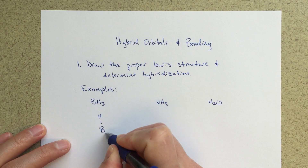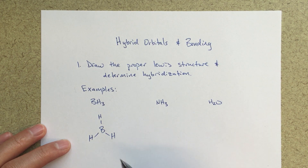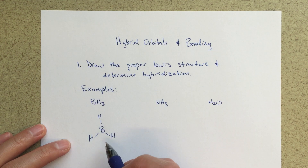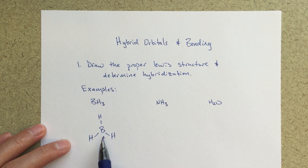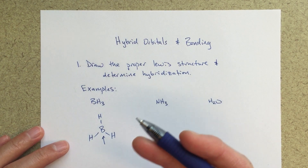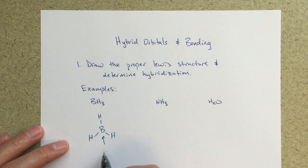For BH3, the geometry is trigonal planar. I can draw this Lewis structure — it's pretty straightforward. In terms of determining hybridization around that boron, we ask: what is the molecular geometry? It's trigonal planar, and if it's trigonal planar, then we're going to have sp2 hybridization. So this boron has sp2 hybridization.